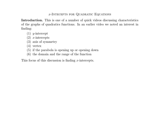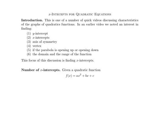This is another in a series of videos discussing quadratic functions and quadratic equations. There are six issues that we're interested in finding in a quadratic function. In this particular one, we're going to focus on the x-intercepts. This will be the first of a two or three part series on x-intercepts. The first question we'll discuss is how many x-intercepts are there in the function f(x) = ax² + bx + c?